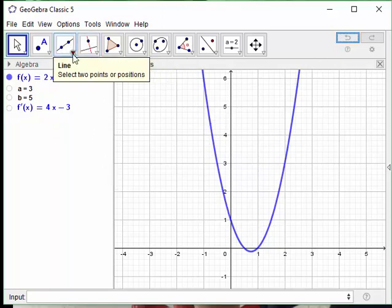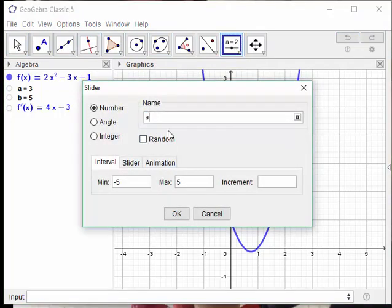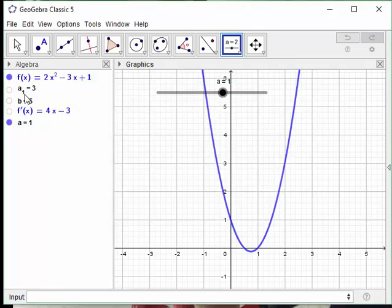I'm going to make a slider a and just let it run from negative 5 to 5. It changed the name of that value since it was called a. But now I have a slider a that I can change the value of.